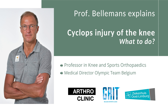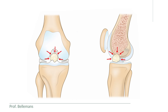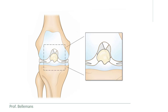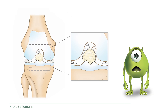Cyclops injury, or cyclops lesion in the knee, is in fact scar formation at the insertion of the ACL — the anterior cruciate ligament. This scar formation usually occurs after ACL injury or after ACL surgery. Because the scar tissue frequently forms in a spherical, rounded shape, it gives the appearance of a cyclops when you look at it from the front. That is where the name comes from.